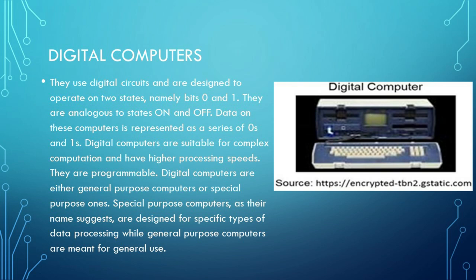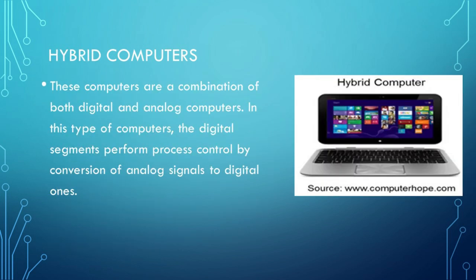Special purpose computers, as their name suggests, are designed for specific types of data processing, while general purpose computers are meant for general use. Hybrid Computers are a combination of both digital and analog computers. In this type, the digital segments perform process control by conversion of analog signals to digital ones.